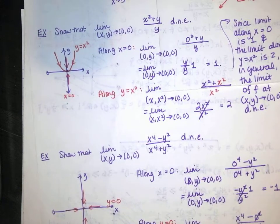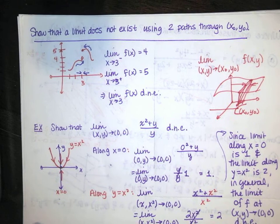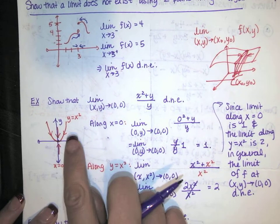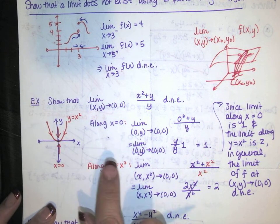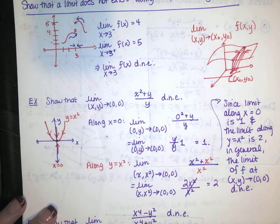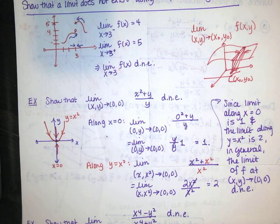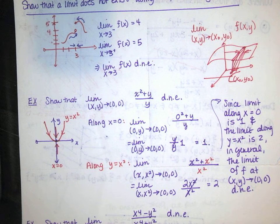Your goal is to find two different paths that pass through your point of interest, x naught y naught, that give you two different limits. If you can do that, the limit doesn't exist. If you keep getting the same limit, you're not done — you've got to keep going until you find two paths that give you different limits.